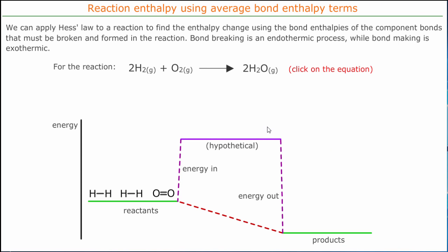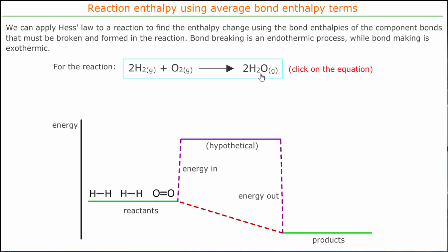Here we're going to have a look at how to use average bond enthalpy terms to work out the energy change in a chemical reaction. It's important to point out that everything must be gaseous. In this case we've got two hydrogen molecules reacting with one oxygen molecule making two water gas particles.